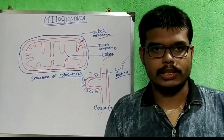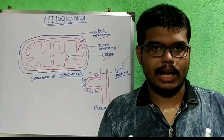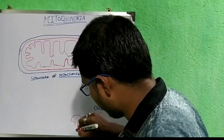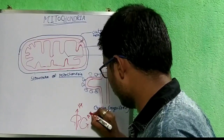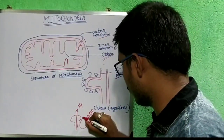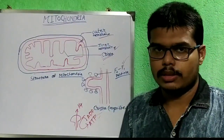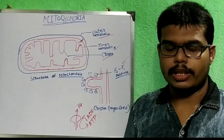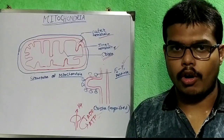These F0-F1 particles have an important role in our cell. They allow the movement of H⁺ ions through them. If we draw these F0-F1 particles, they allow H⁺ to pass through and help in production of ATP from ADP. So, after the passing of H⁺ through them, ADP and phosphate join together and form ATP. In this way, mitochondria helps in the production of ATP.